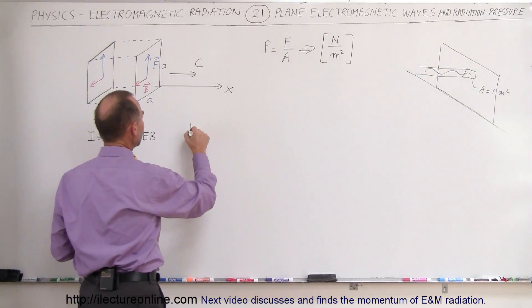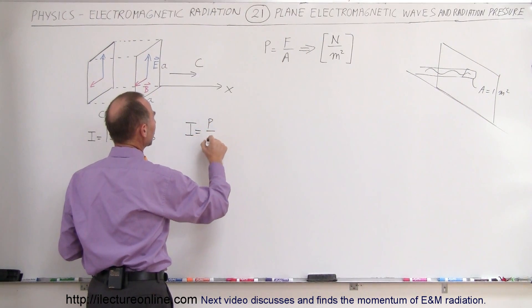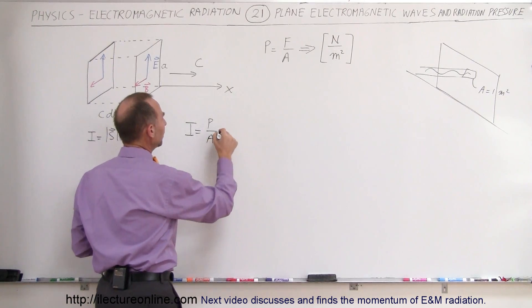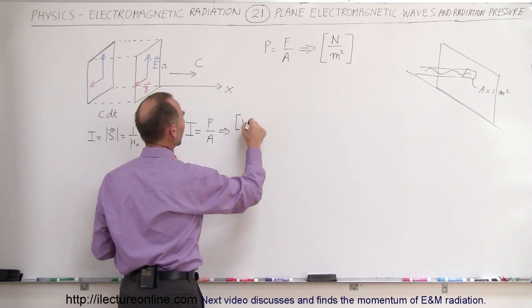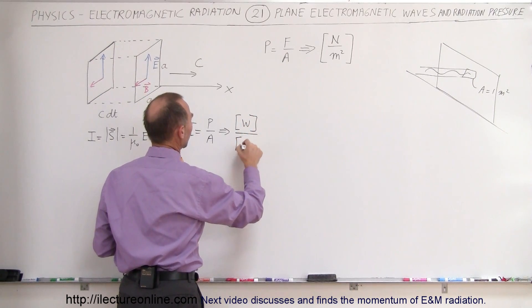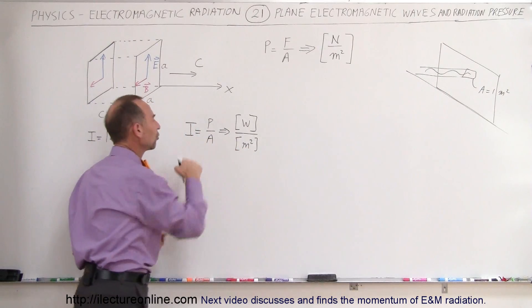The unit of intensity is equal to, well, we know that intensity is power per unit area. And power, the units for power is equal to watts per area would be square meters. So here we have watts per square meter, those are the units for intensity.